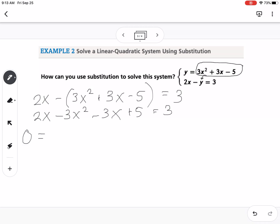So this would become positive 3x squared. If I move the 2x minus 3x, that'd be negative x. If I move it to the other side, it's going to be positive x. And then the 5, if I subtract that from both sides, I get minus 2.